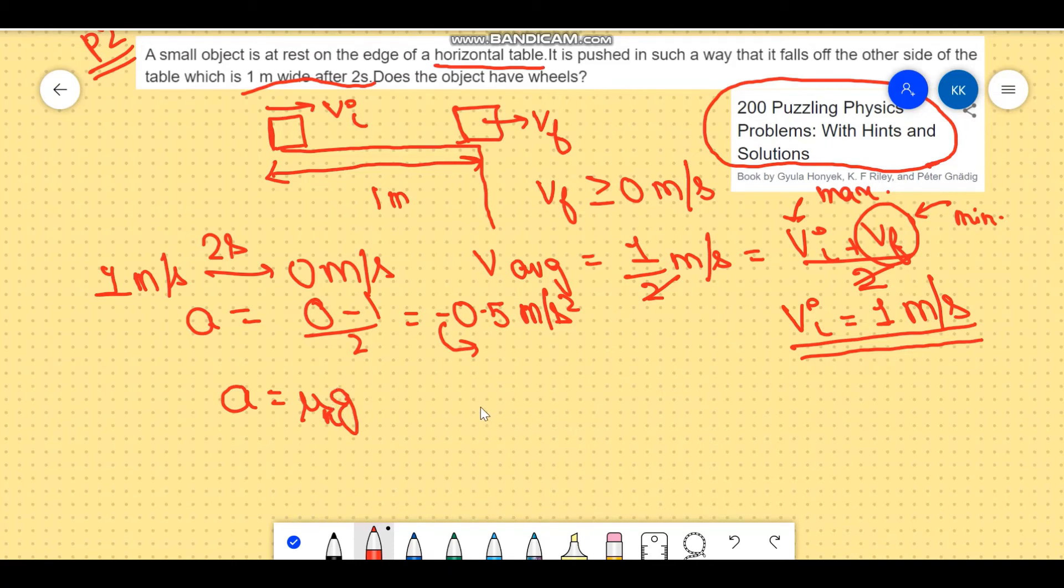So we can calculate the coefficient of kinetic friction. The modulus of the coefficient of kinetic friction would be 0.5 over 10 which is 0.05. Now you can see the coefficient of kinetic friction is a dimensionless quantity. This is quite a small value. The usual range of kinetic friction is greater than 0.1.